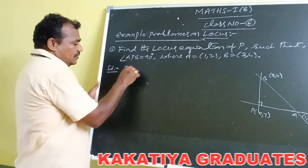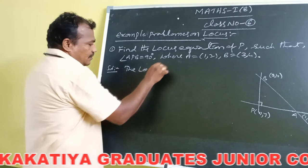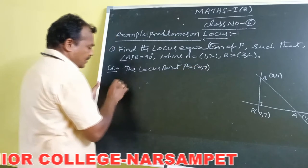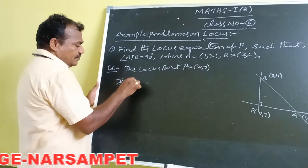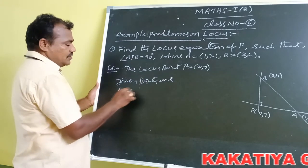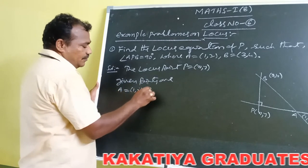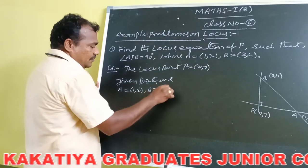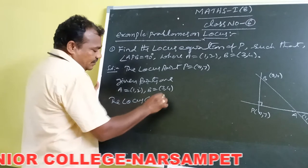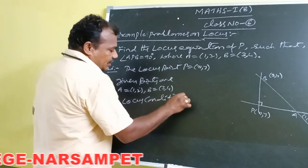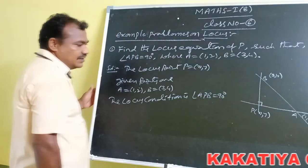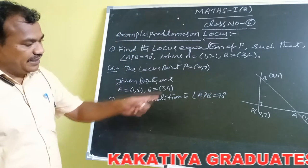The locus point coordinates: P is equal to (x, y). The given points are A is equal to (1, 2) and B is equal to (3, 4). The locus condition is angle APB is equal to 90 degrees, meaning AB subtends a right angle at that point P.